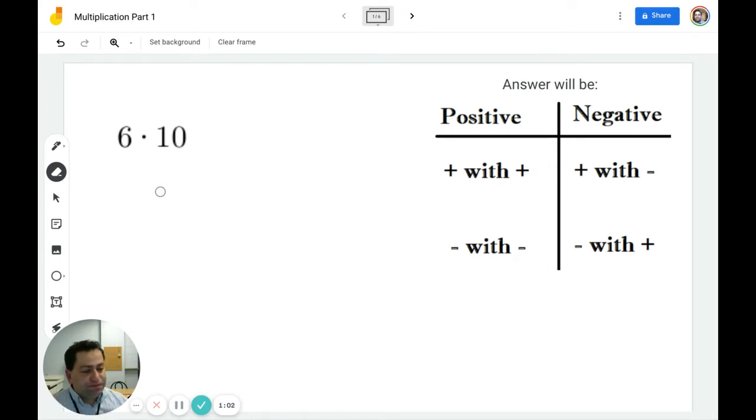Let's do some examples. In example number one here, we have 6 times 10. Just like with addition and subtraction, if you have no sign in front of an integer, we can assume that it's going to be positive. So in this case, I have a positive integer times a positive integer. Therefore, my answer will be positive.